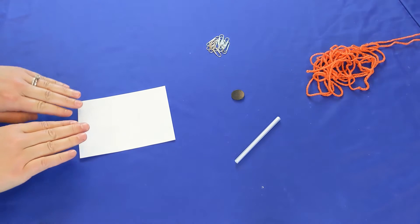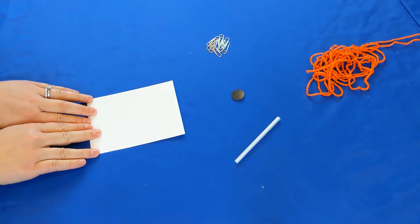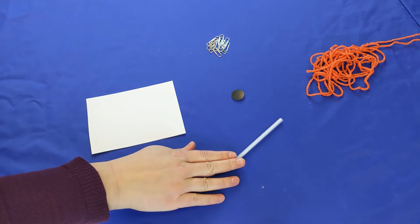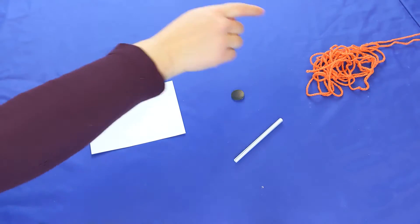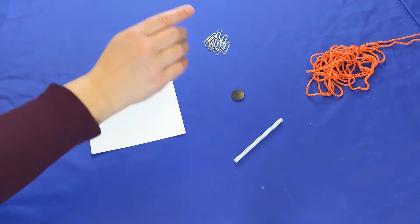In your kit you will find one piece of cardstock, a straw, some string, some paper clips, and a magnet.